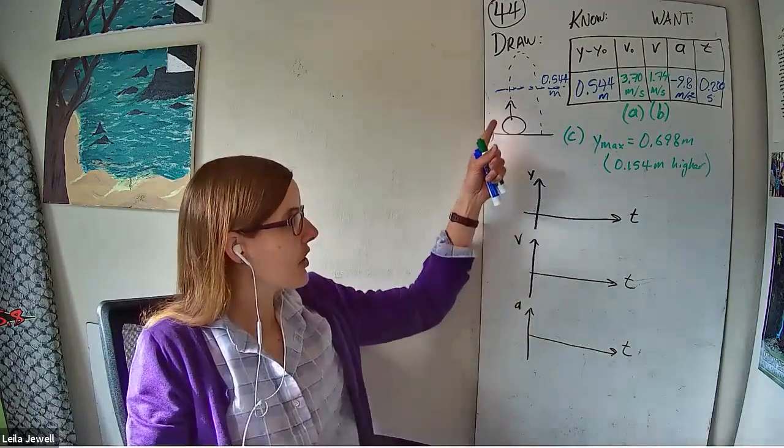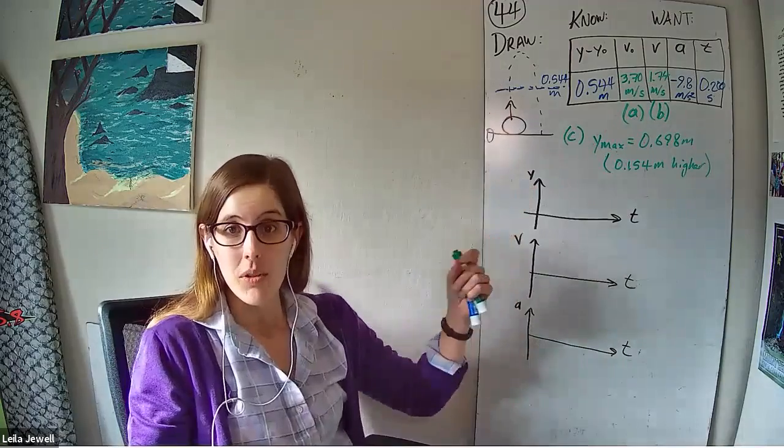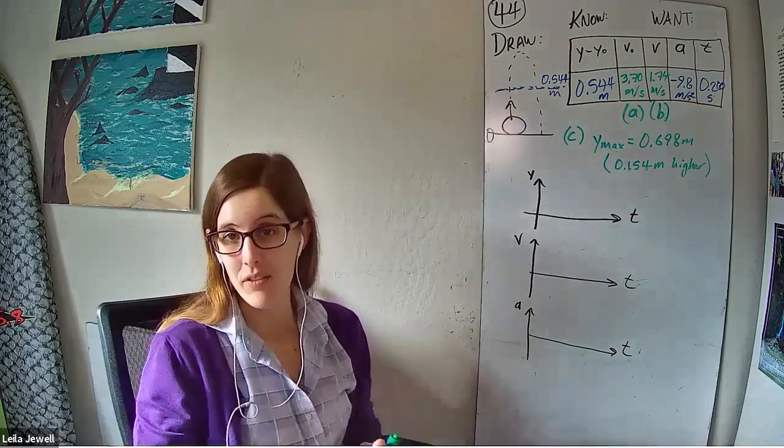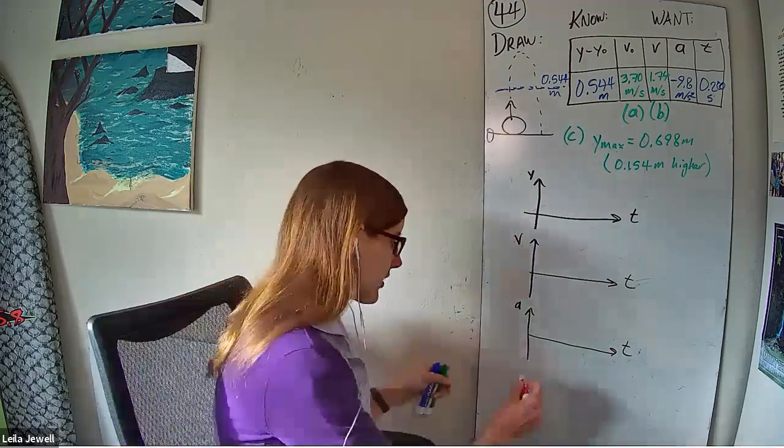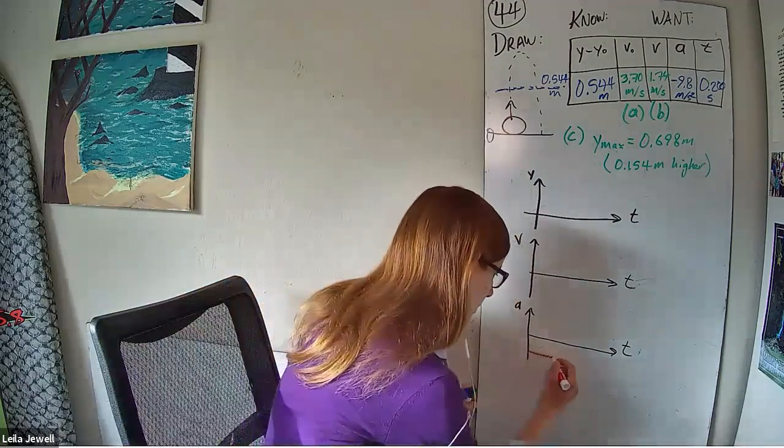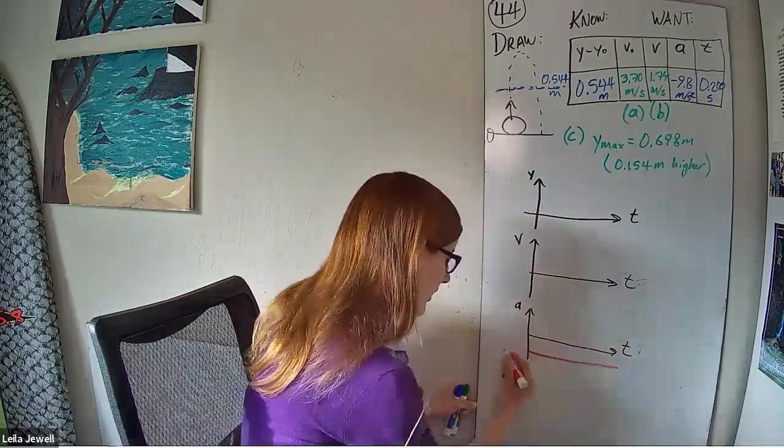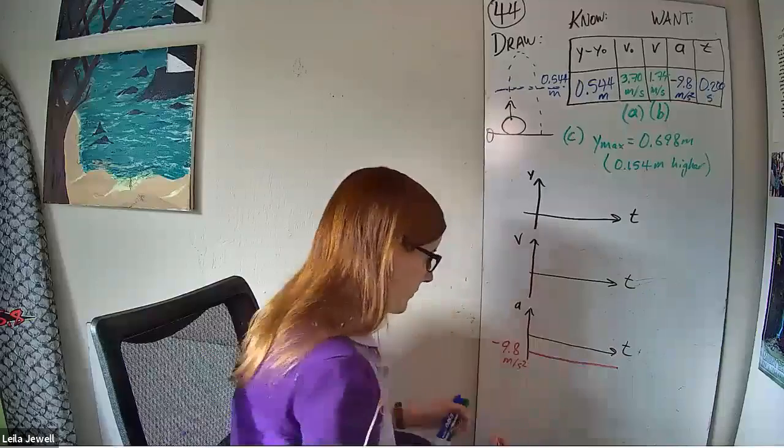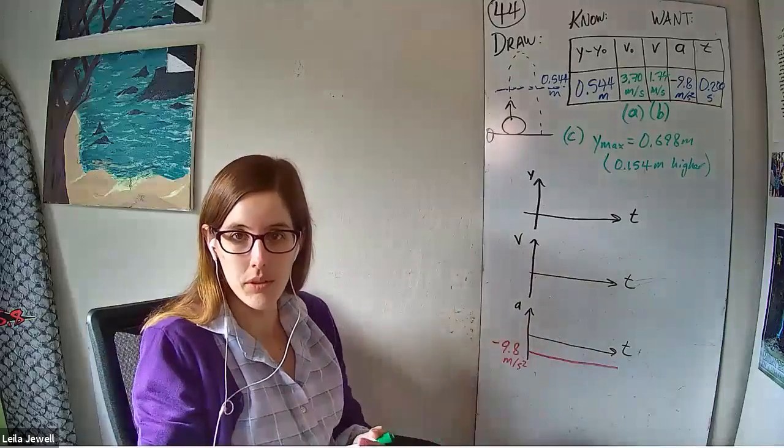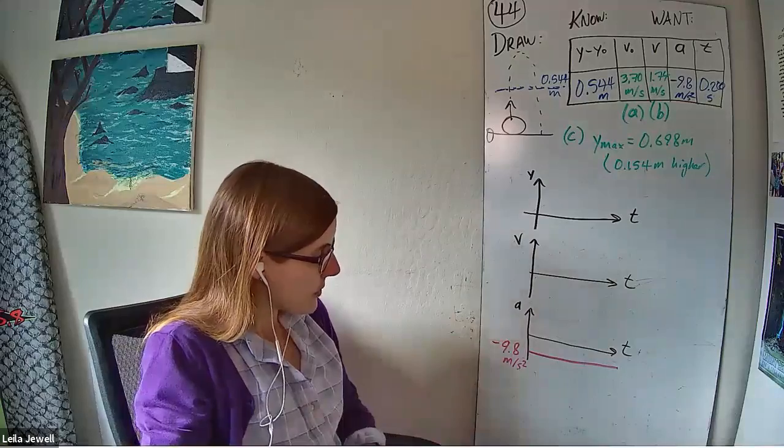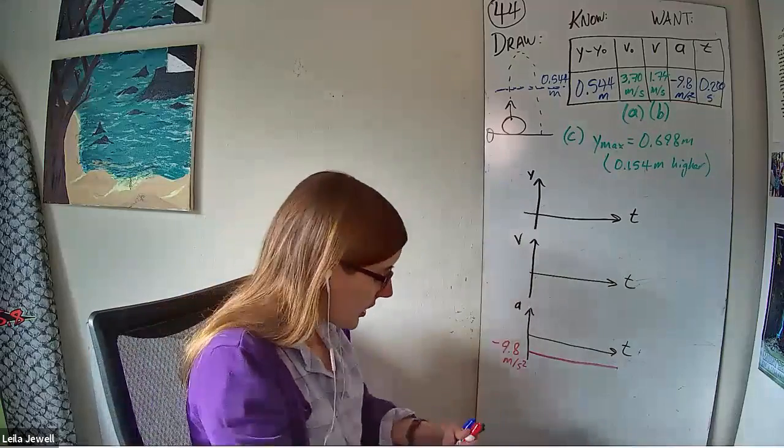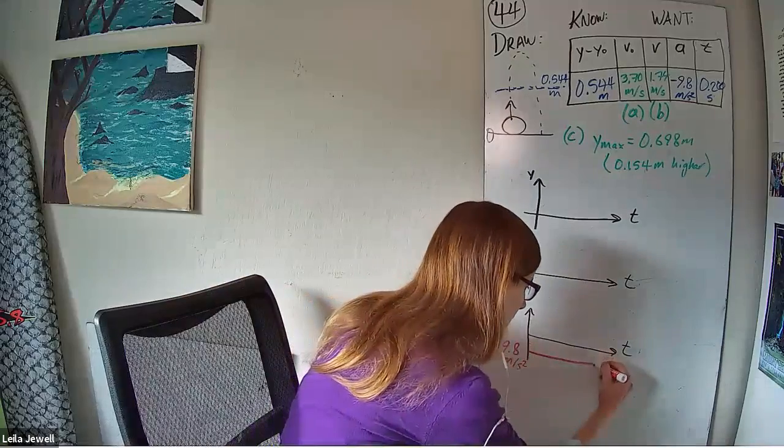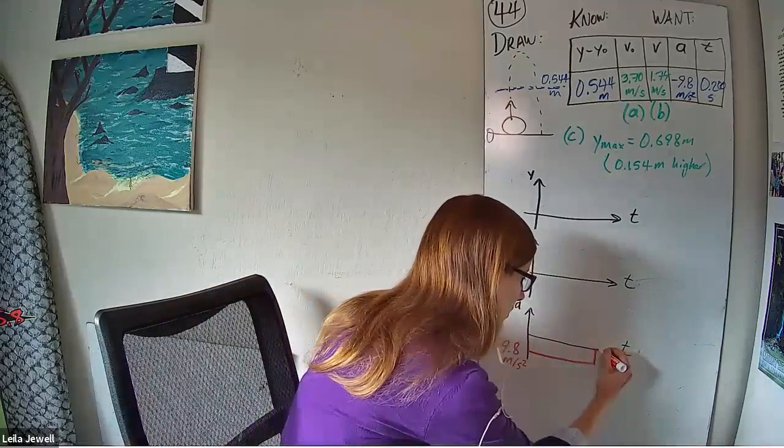Well, as long as the armadillo is in the air, we know exactly what the acceleration is. It is always that constant negative 9.8 meters per second squared. So that's something we can draw in. Boom, right there, negative 9.8 meters per second squared, with a label for all of time. You can technically stop it when the armadillo hits the ground if you wanted, because once the armadillo is on the ground, no longer accelerating.